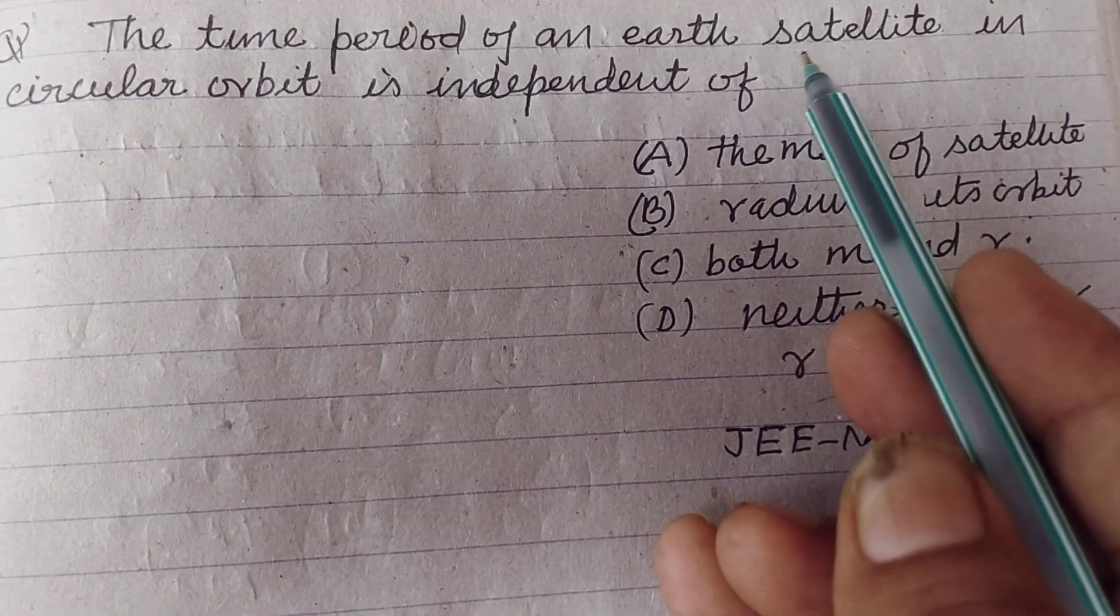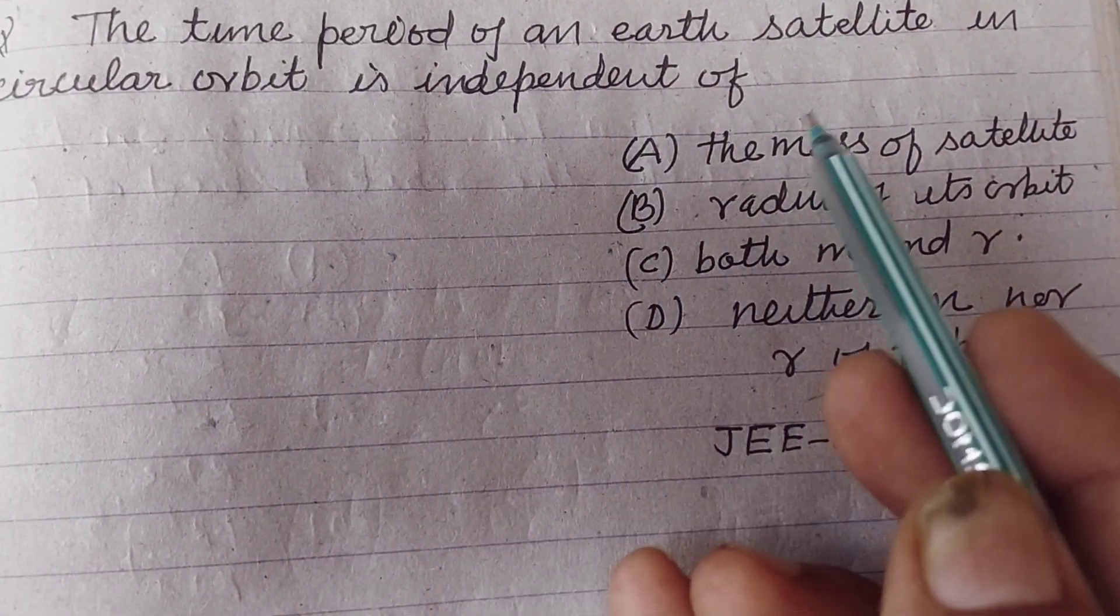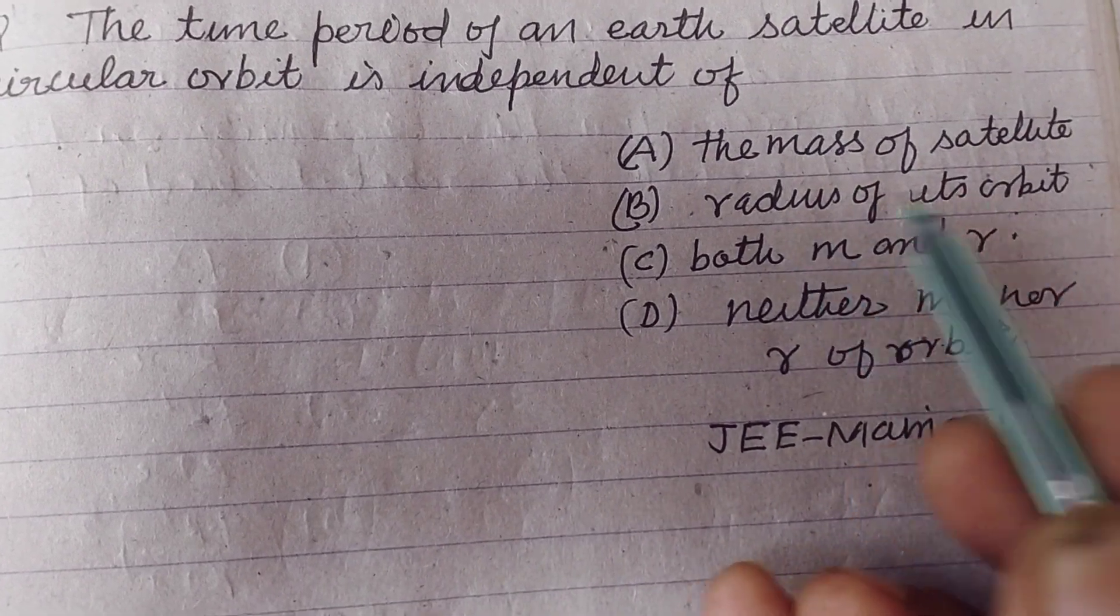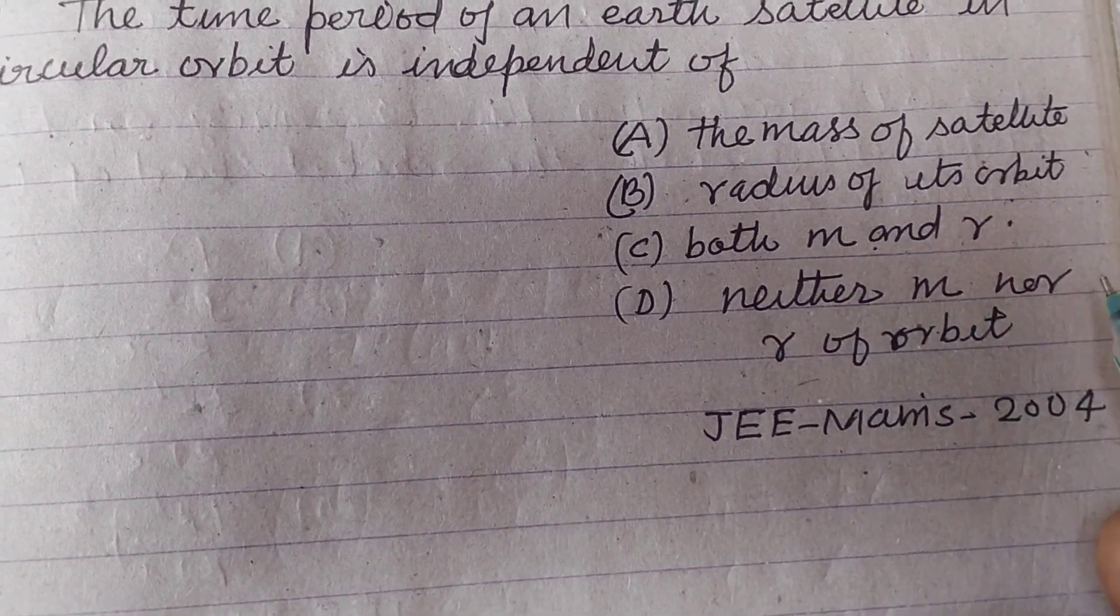The time period of an Earth satellite in circular orbit is independent of: A) the mass of the satellite, B) radius of its orbit, C) both mass and radius, D) neither mass nor radius of orbit.